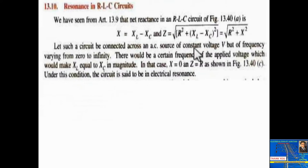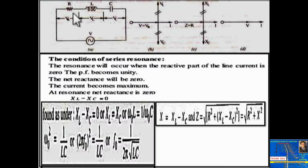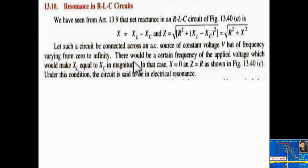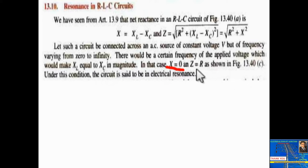Let such a circuit be connected across an AC source of constant voltage V. This is the RLC series circuit connected across a single-phase AC supply voltage. The frequency varies from 0 to infinity, and there would be a certain frequency of the applied voltage which would make XL equal to XC in magnitude. In this case the net reactance becomes 0 (X = 0), and total impedance of the circuit will be equal to R. Under this condition the circuit is said to be in electrical resonance.